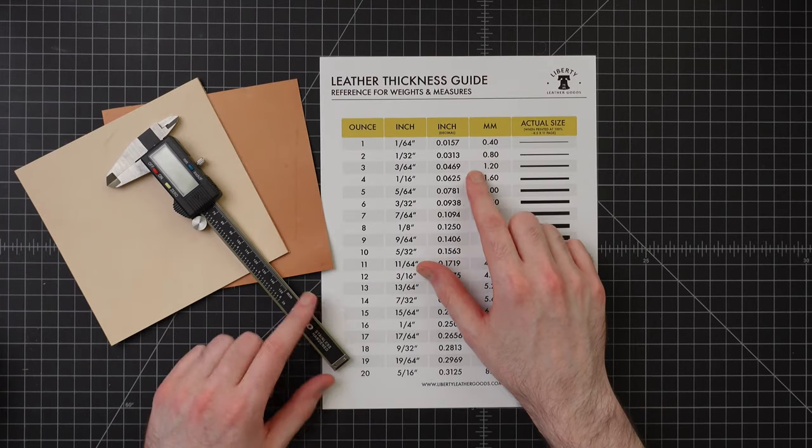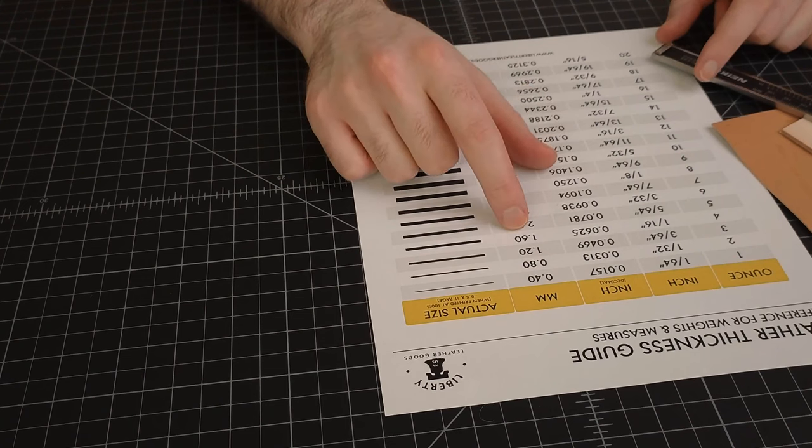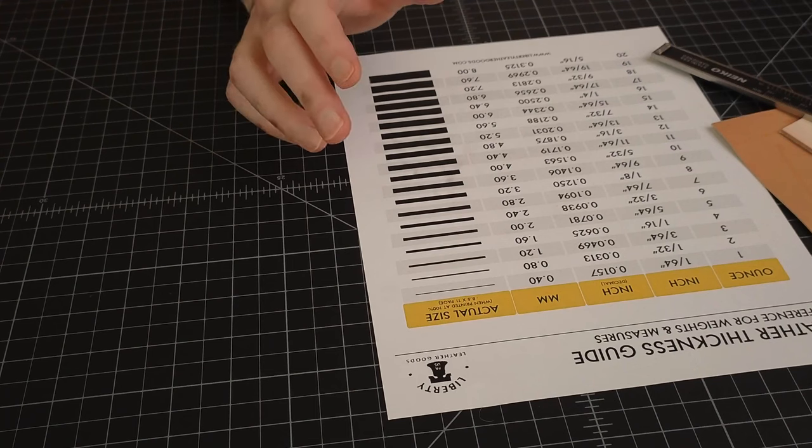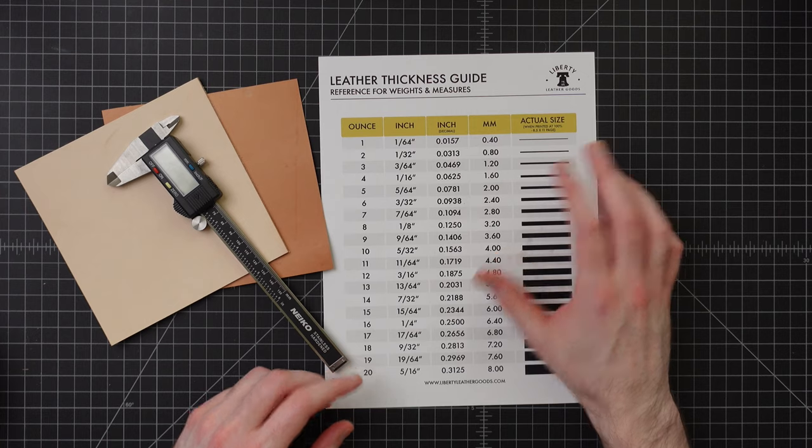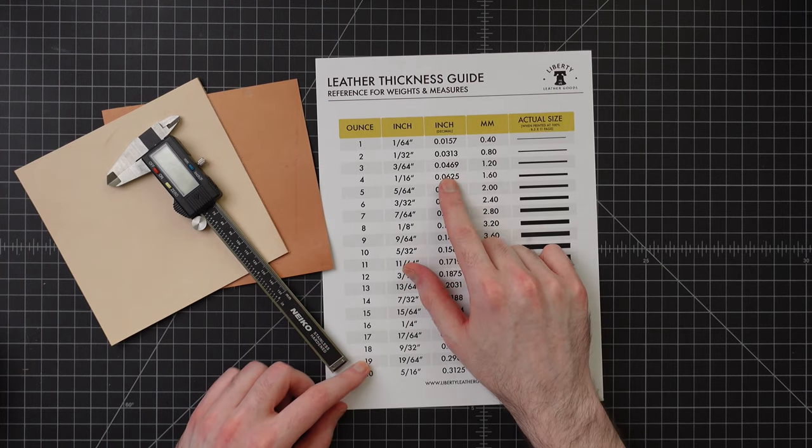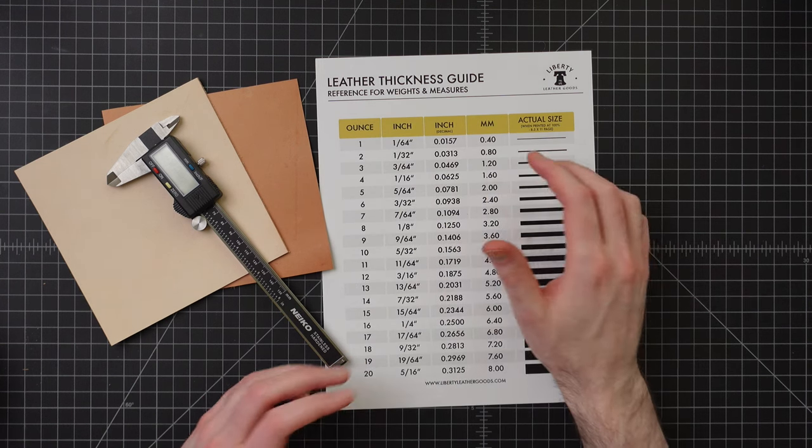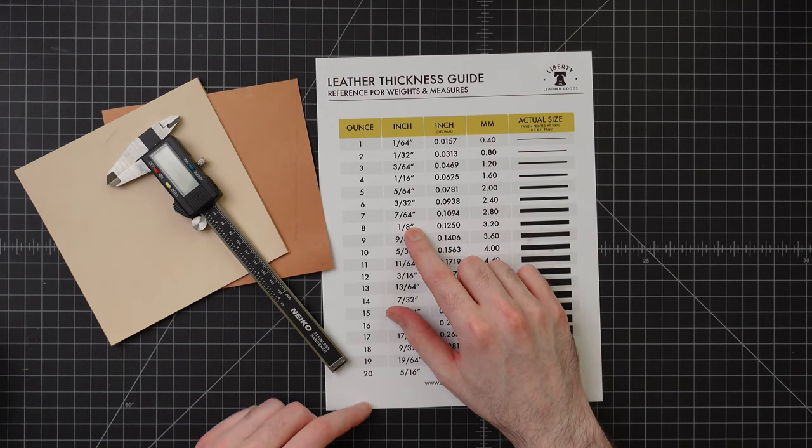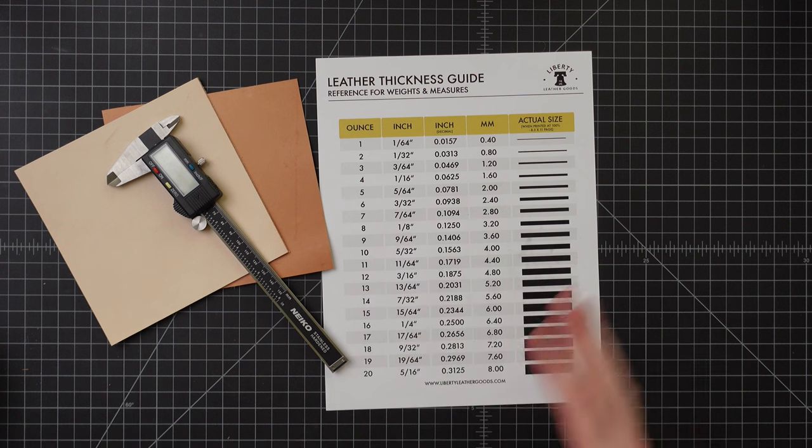Originally, there are three main types of measures for leather. We have irons, millimeters, and ounces. Irons was a standard developed and used primarily by cobblers where one iron equals 1/48th of an inch. We don't use that too much anymore so we won't dive too deep. We're going to focus primarily on millimeters and inches.